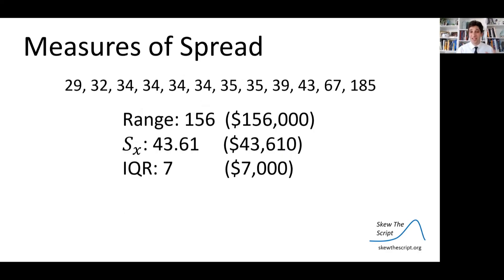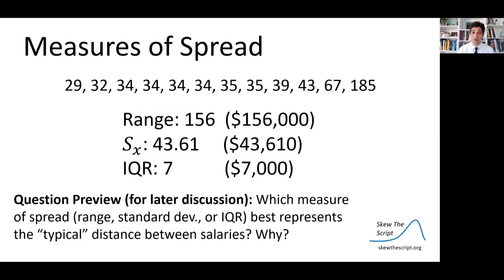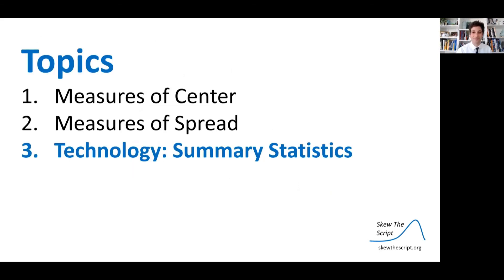So here are three measures of spread: range, standard deviation, and IQR. Another question to consider for later discussion: which measure of spread best represents the typical distance between salaries, and why? Finally, we're going to talk about how to calculate these summary statistics using technology — specifically the TI-84 calculator.